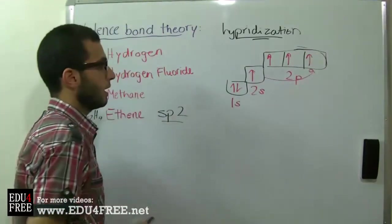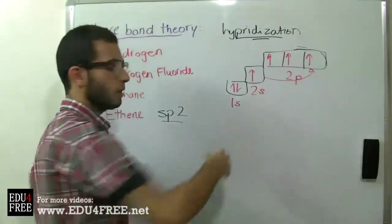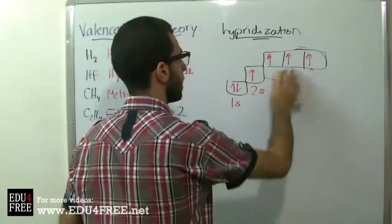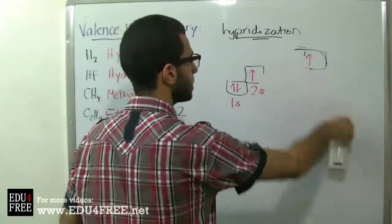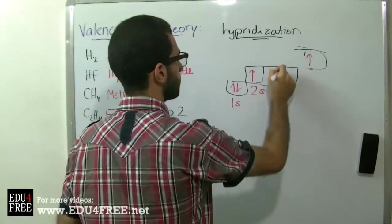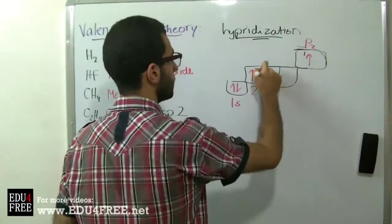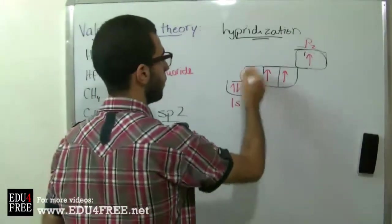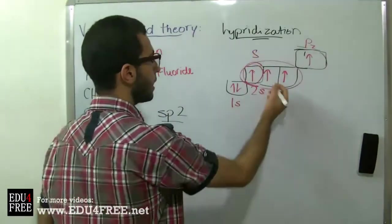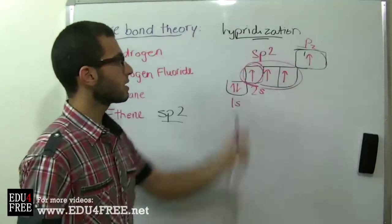The different step here is that instead of letting all three p orbitals move down to meet the energy level of the 2s, only two of them move down while the pz orbital remains at the same energy. So this gives us the new hybridized orbital called sp2 — using one s orbital and two p orbitals.